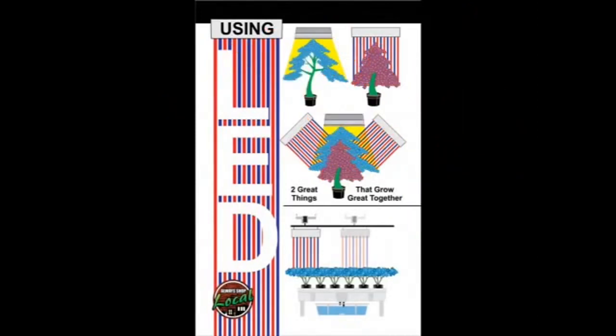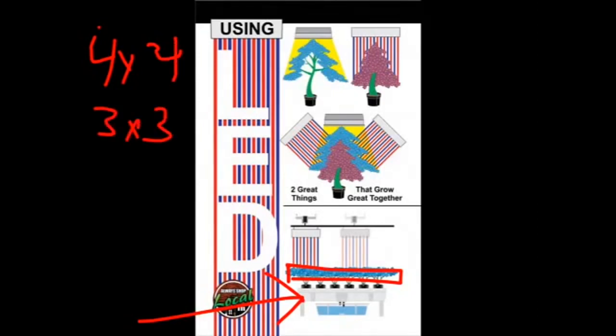Last thing is this image here. If you're on a 4x4 table, in a 3x3 tent, it's kind of tough to grow in the whole area when your LED is 1x2. So what I try to show you guys is this. Always put your LED on a light mover.